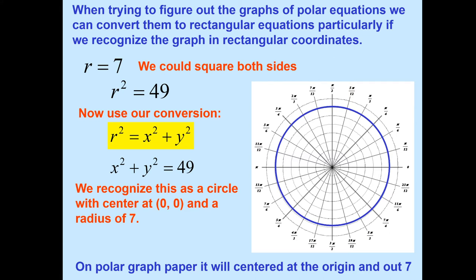In polar coordinates, imagine this as the earth — you're looking out from the pole. So r equals 7 means it's out 7 from the origin, from the pole. On polar graph paper, it centers at the origin and extends out 7. It's just a circle.